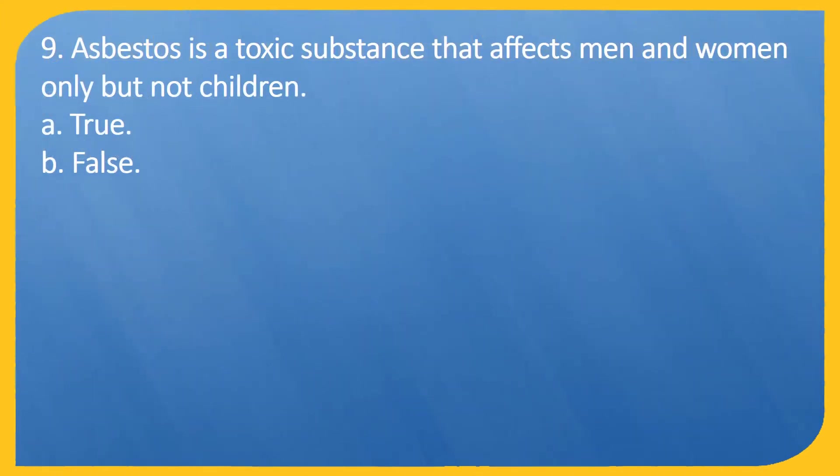Question 9. Asbestos is a toxic substance that affects men and women only, but not children. A. True. B. False.